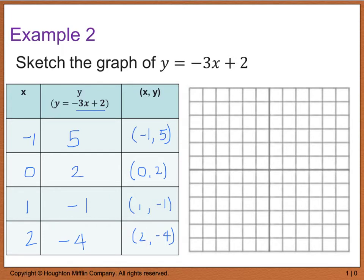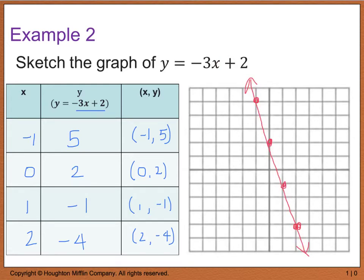Coming over to the graph, I plot negative 1 comma 5, 0 comma 2, 1 comma negative 1, and 2 comma negative 4. The most important thing is to connect all these points. Connecting them gives a straight line. As a confirmation, I have a first-degree polynomial, which should be a linear line — and that's exactly what I got. It's a good second check.